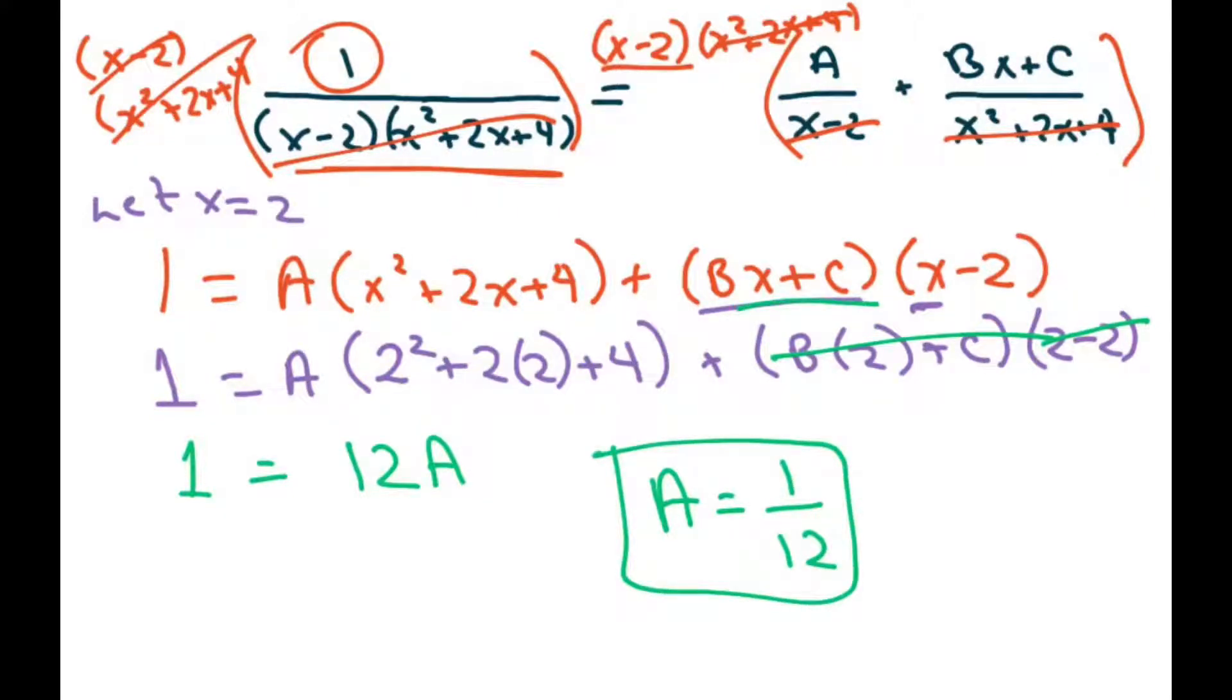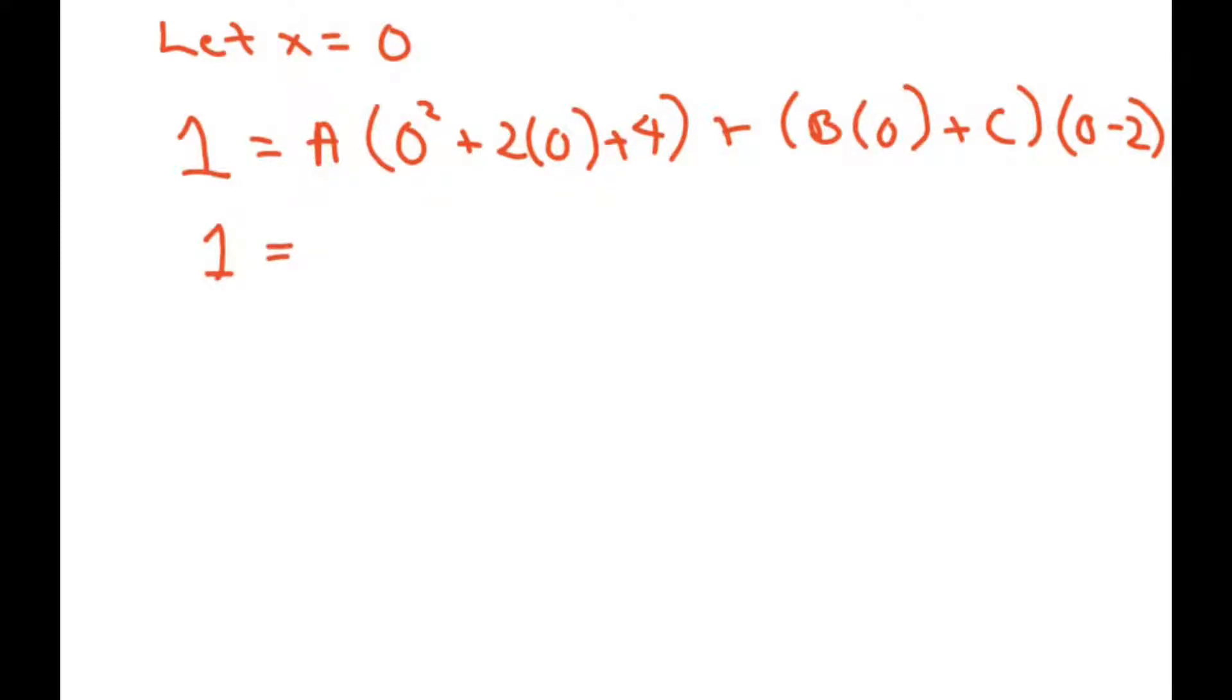Now for this part, we need to find our B and C, so let's let x be 0. So you get 1 equals A times 0 squared plus 2 times 0 plus 1 plus 4, and then we have plus B times 0 plus C times 0 minus 2. Alright, so we get 1 equals 4A, because that cancels out, so 4 times A, the B cancels out, so you just get minus 2C.